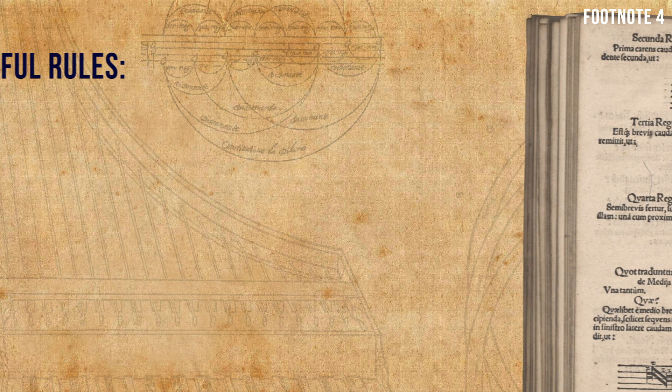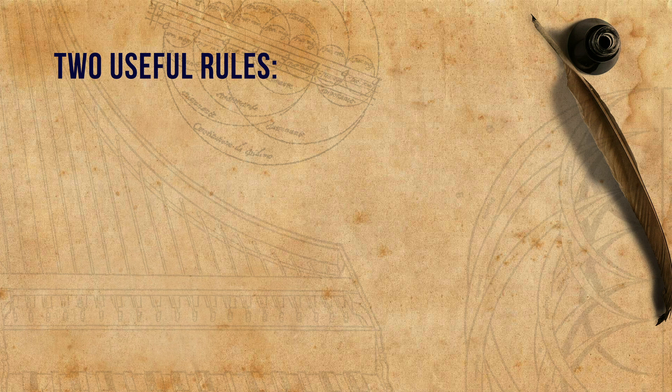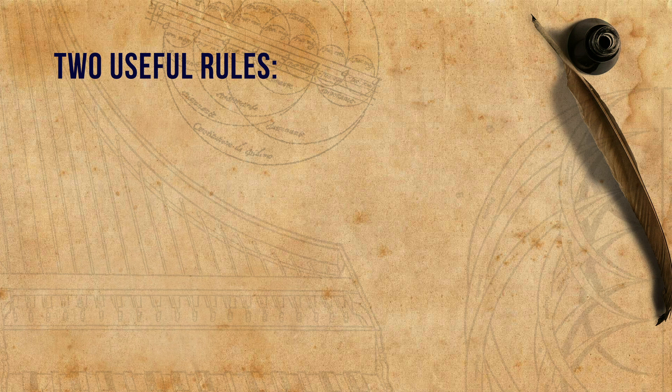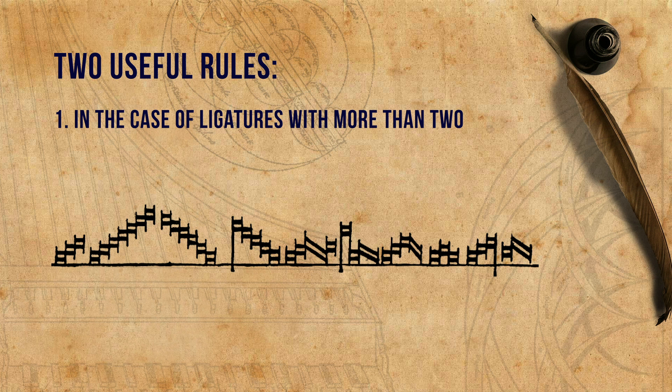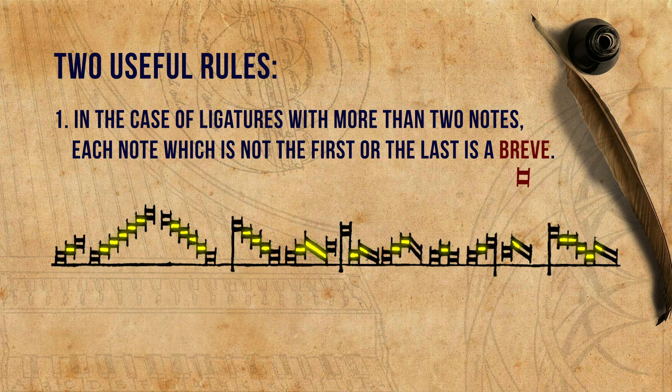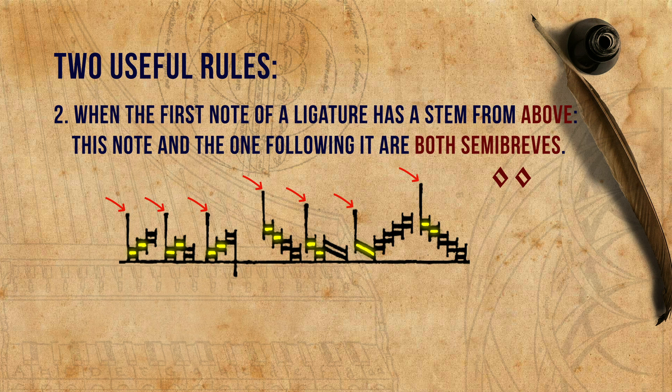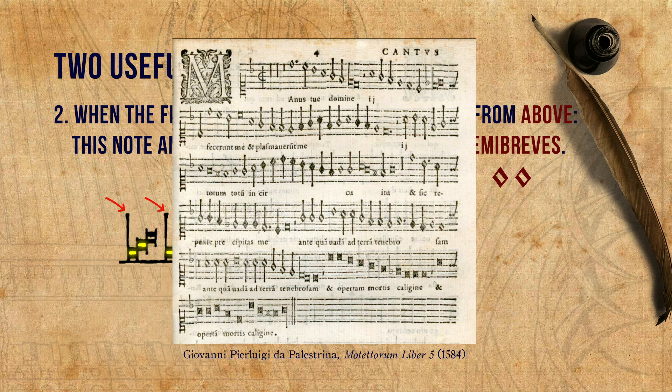Before sending you home to practice reading ligatures, here are two further basic and useful rules. One: in the case of ligatures with more than two notes, each note which is not the first or the last is a breve. Two: when the first note of a ligature has a stem from above, it means that this note and the one following it are both semibreves — this rule overrides other rules. This ligature was almost the only one that stayed in use by the end of the 16th century; the others died out.